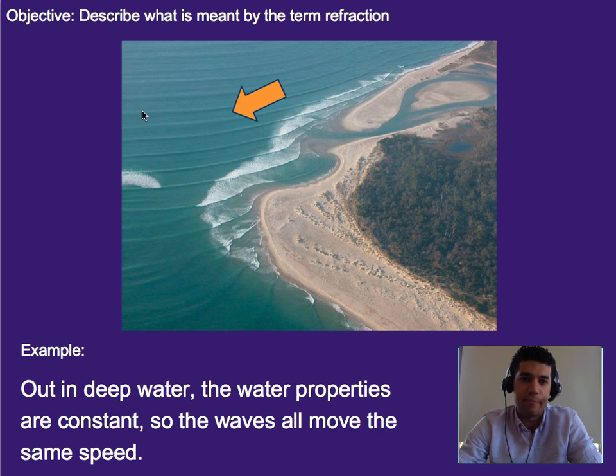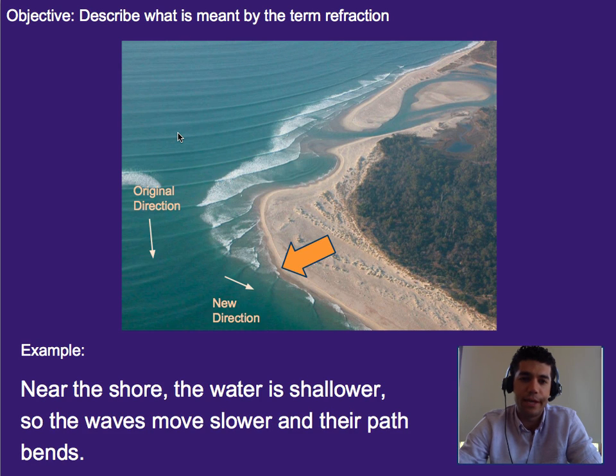So out in deep water we get kind of parallel lines because all the waves move at the same speed, but as we get closer to shore, they move slower and so we can see that their path literally starts to bend and change. And so that's what's going on here.